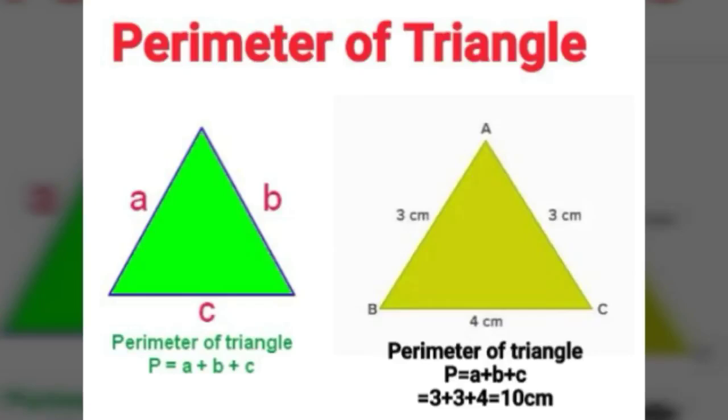For example, a Triangle has 3cm, 3cm, and 4cm lengths of sides. Then Perimeter of Triangle equal to 3 plus 3 plus 4 equal to 10cm.